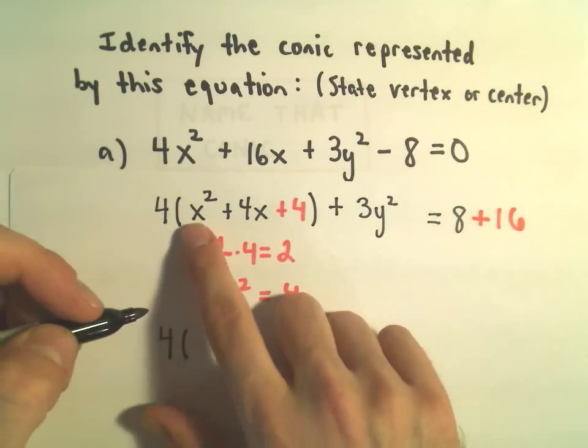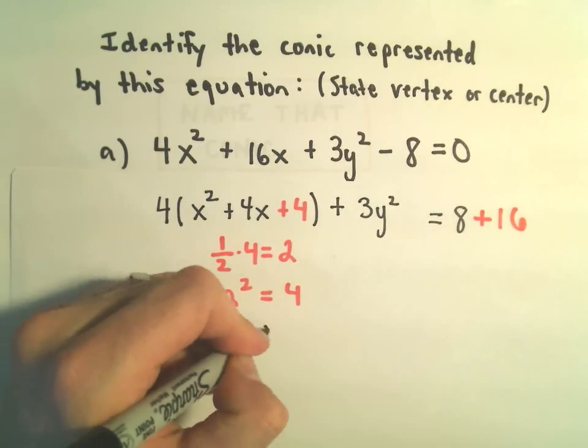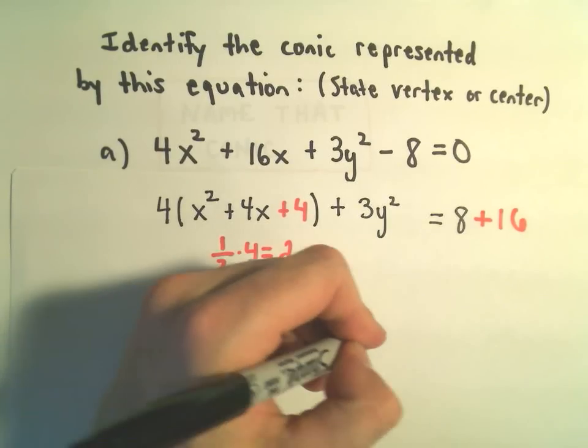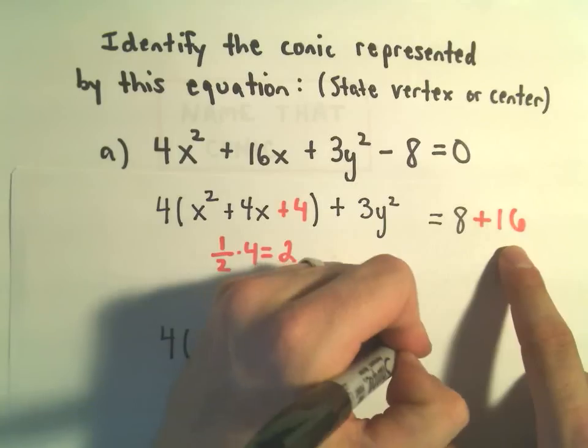And now I'm going to write x squared plus 4x plus 4 as x plus 2 quantity squared plus 3y squared equals 8 plus 16, that's 24.